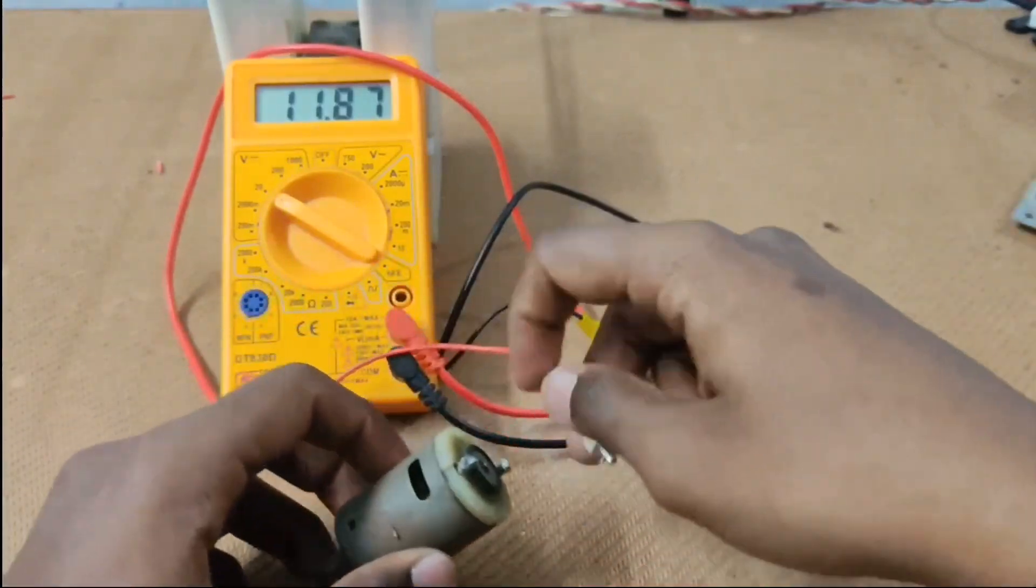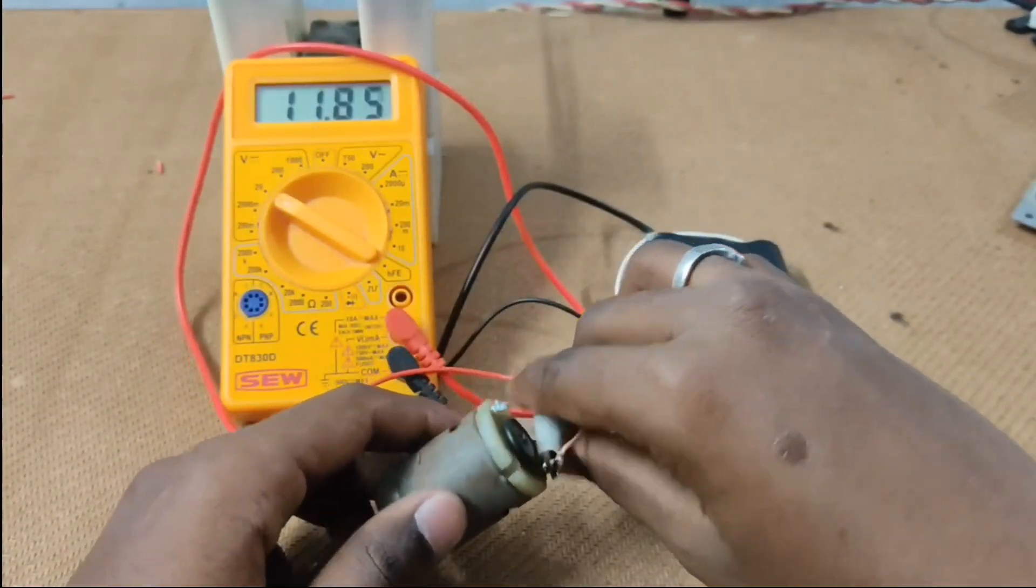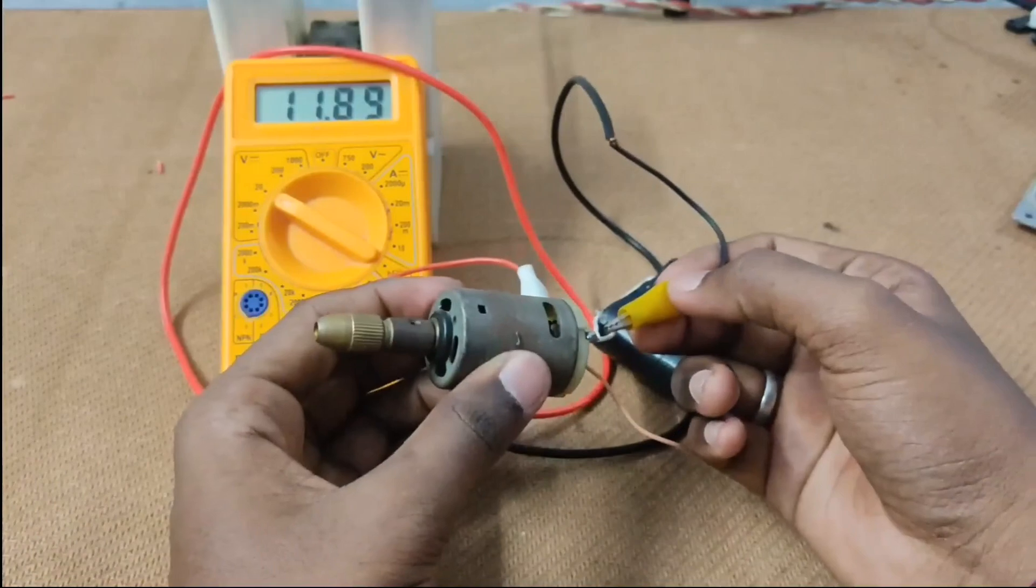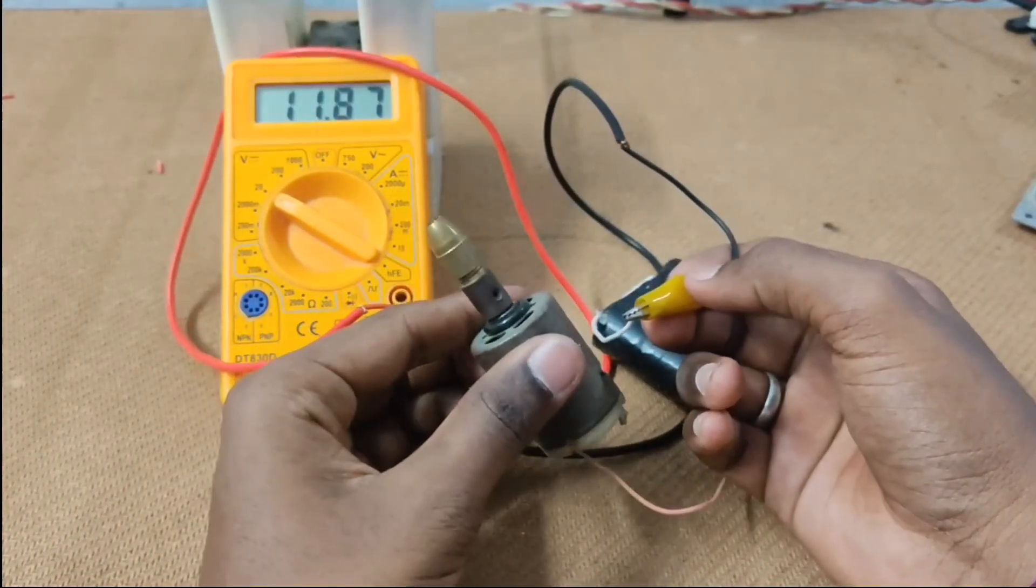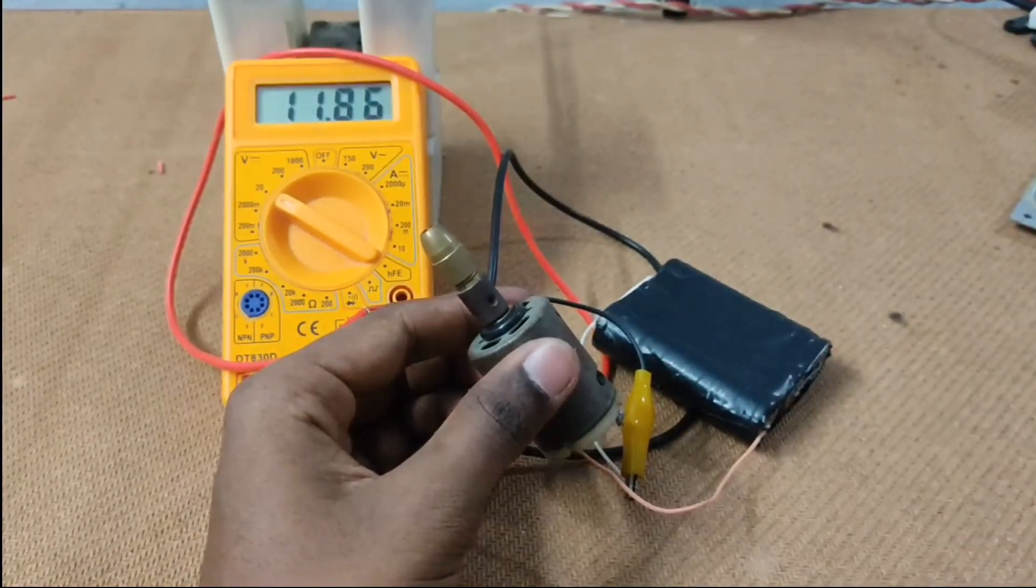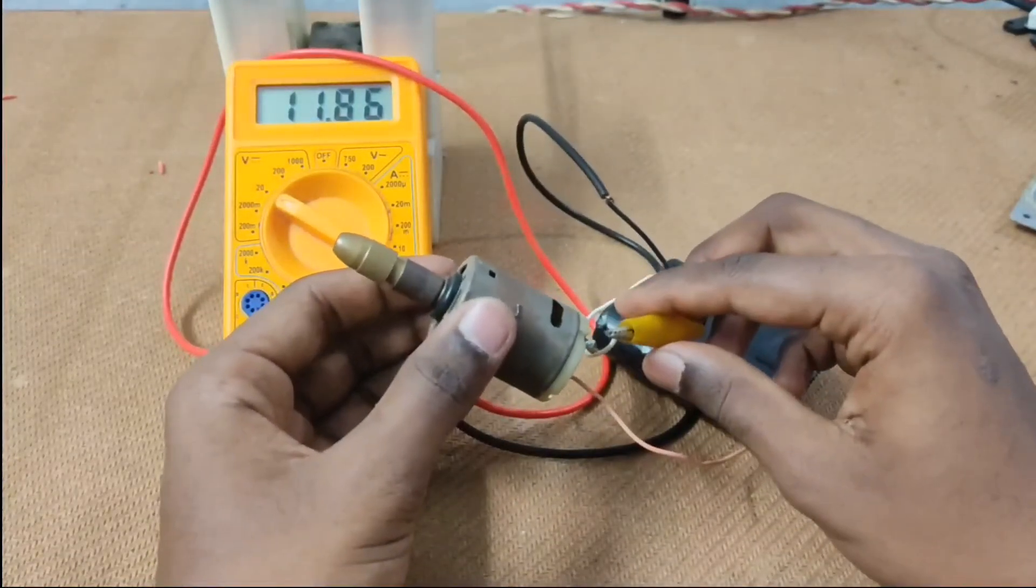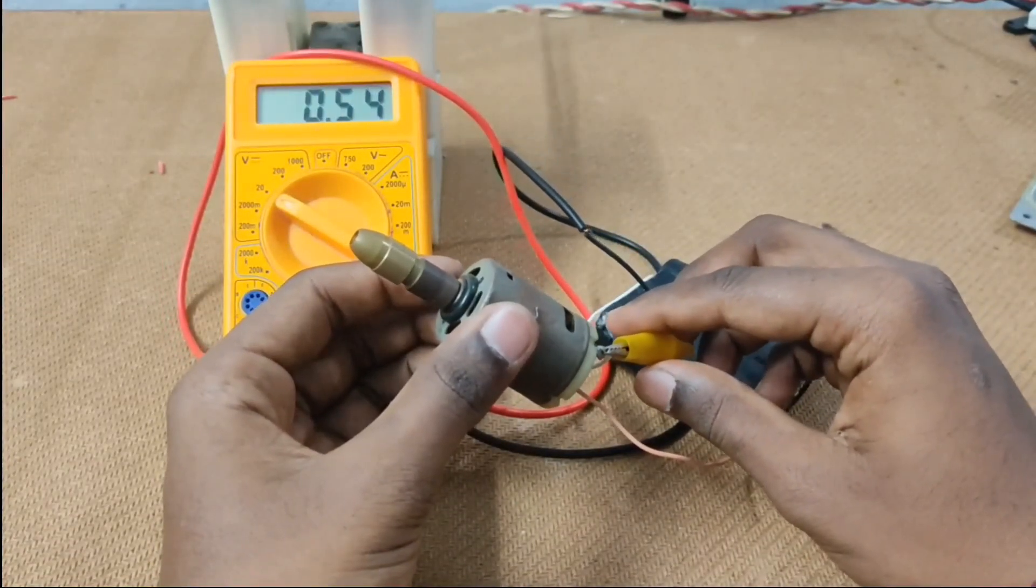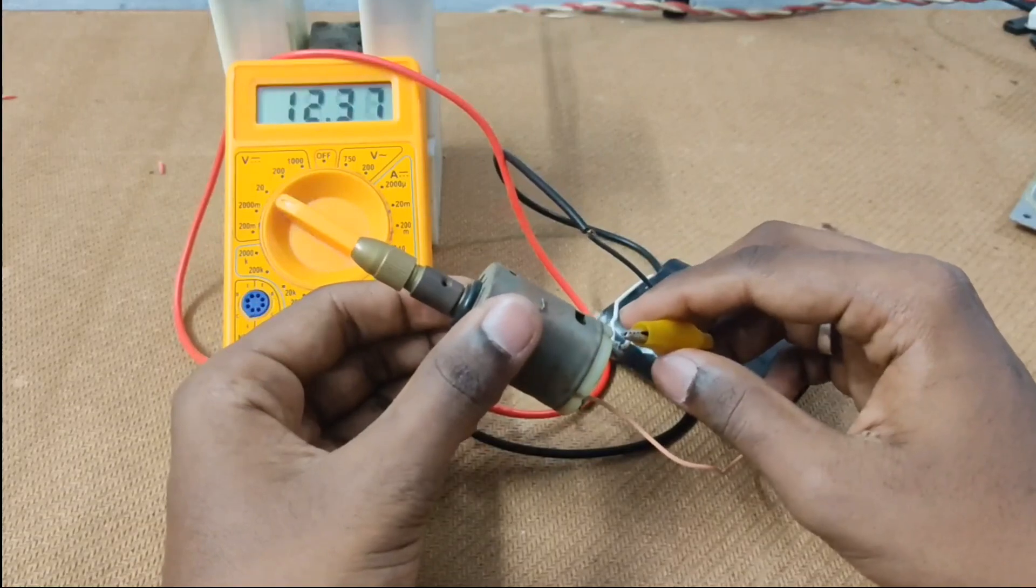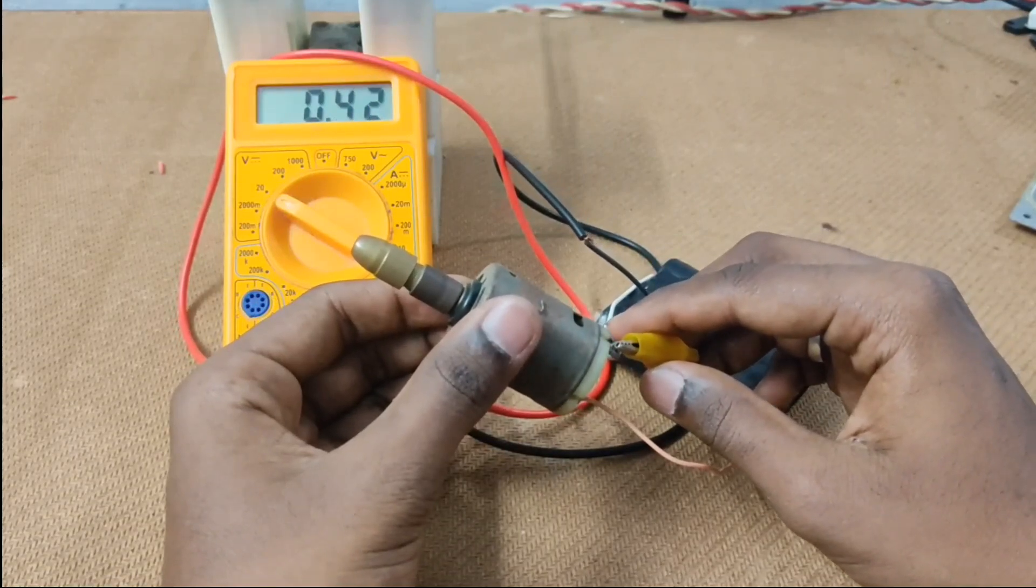I am now testing the motor, so the motor is running. This is 12 volts, so it is low current rating. Now you can see that the motor is running, and the voltage is dropped in the meter.